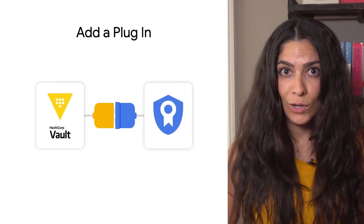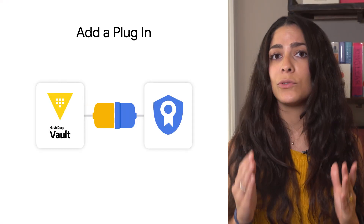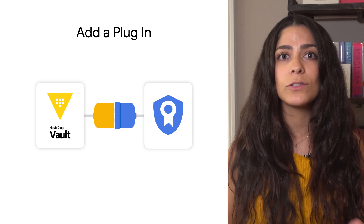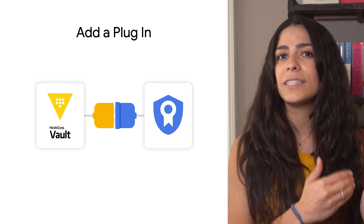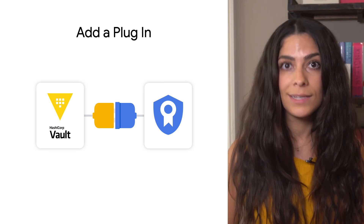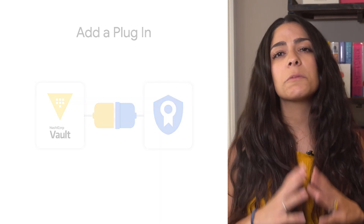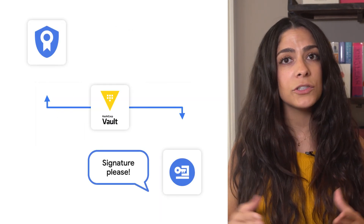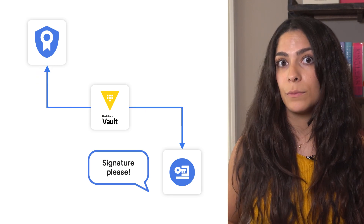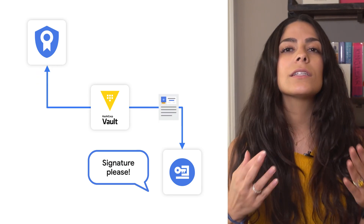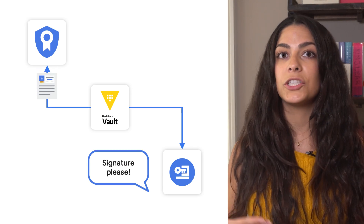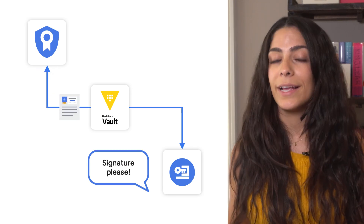By adding a plugin for Vault, you can instruct it to act as a proxy issuing certificates through Google's CAS, backed by Vault-secured secrets. It works by generating a private key and certificate signing request, or getting the request from a user, to deliver certificates through Vault, with CAS issuing them behind the scenes.